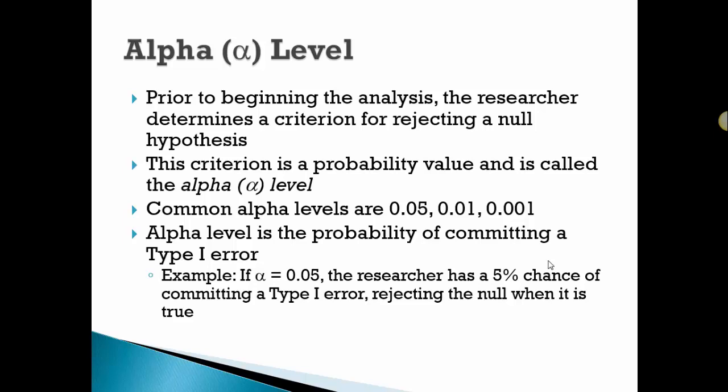For instance, if the alpha level is 0.05, there's a 5% chance that we would, in fact, reject the null when, in fact, it's true.